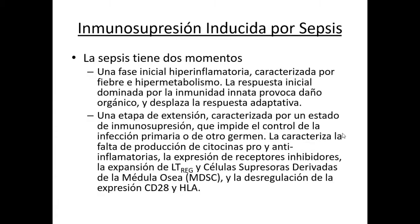La muerte se va a producir en los órganos linfoides secundarios y primarios. Además, en la muerte de las células inmunes, van a comenzar a surgir células que van a regular e impedir la activación celular: linfocitos T reguladores y células supresoras derivadas de la médula ósea. Los macrófagos van a activarse en su forma alterna, bloqueando las respuestas de activación contra gérmenes. En ese estado de falta de capacidad de respuesta, si el paciente se vuelve a infectar, no va a haber posibilidad de que el sistema inmune pueda organizar algún tipo de defensa, y lo más seguro es que el paciente al final muera.